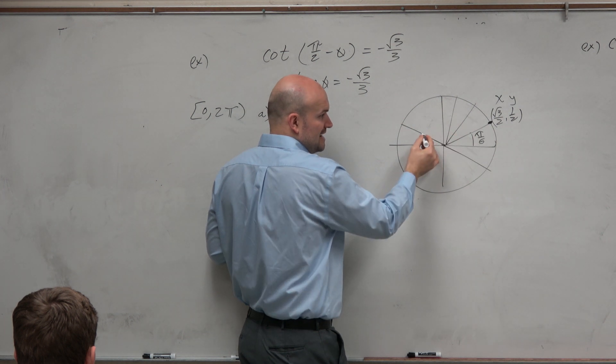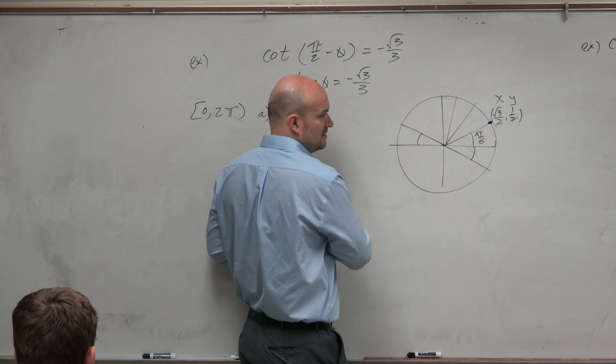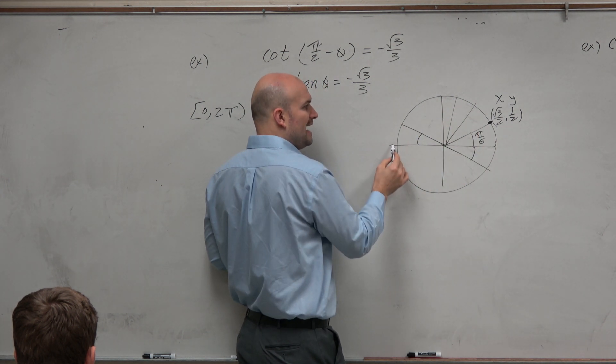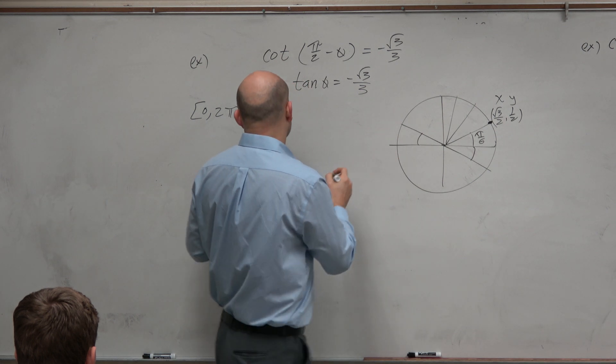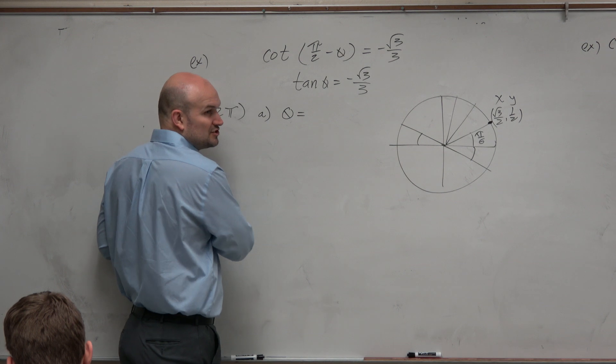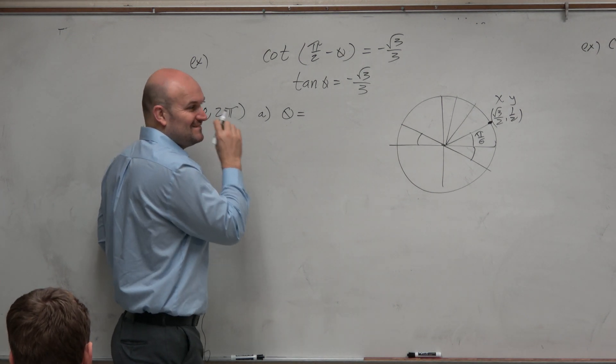So that means the angle has to be in the second and fourth quadrant. The reference angle is the same, still π over 6. So we know halfway around the circle is π, but if we're π over 6 short, that means our first solution is π over 6 short of π is 5π over 6.